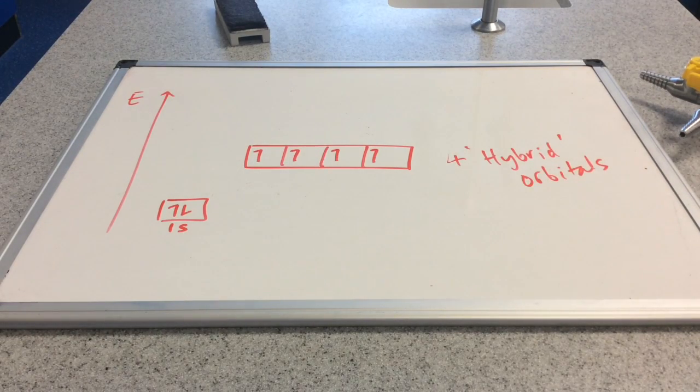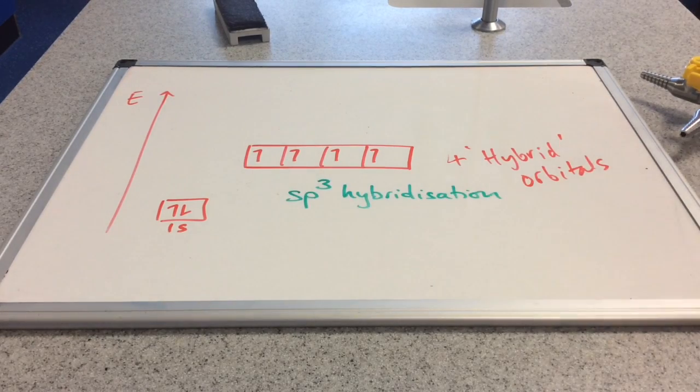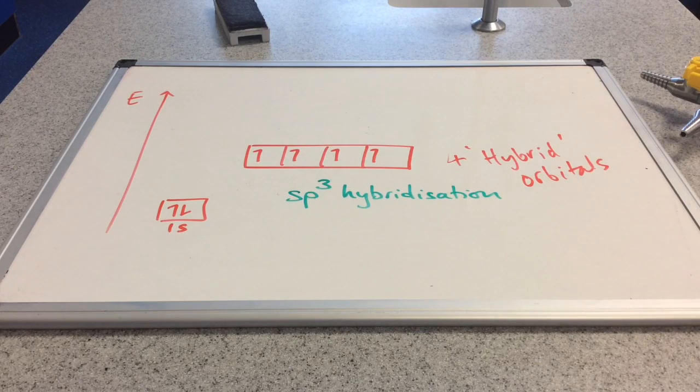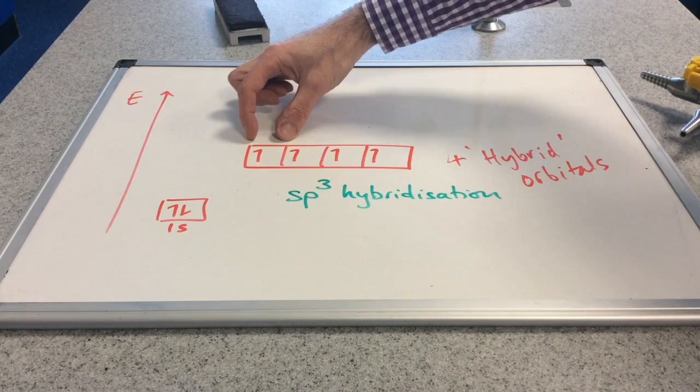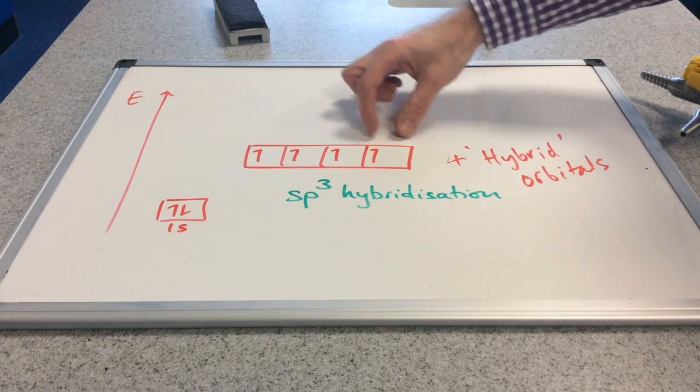And so we call these hybrid orbitals because they've been formed by the blending or merging together of different orbitals. And the term that we give to this process, this is what happens in the alkanes, is called sp3 hybridisation. And that's basically because the blending together of orbitals occurs between an s orbital and three p orbitals.